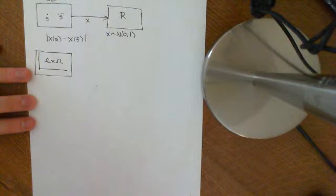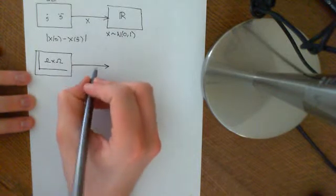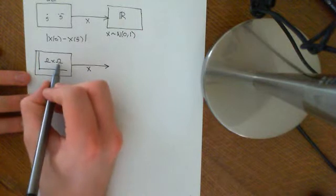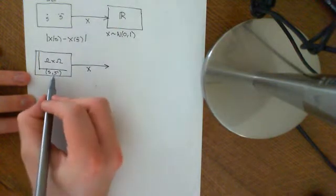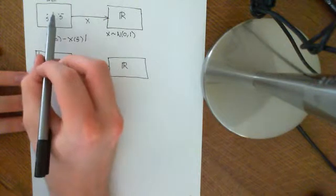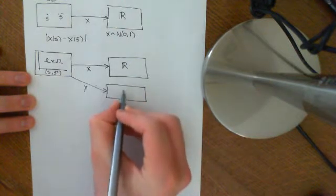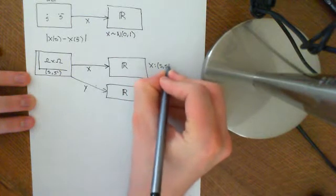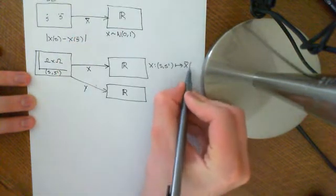Now we're going to set up a joint random variable — two random variables effectively on omega cross omega. We can define the random variable X on this product space: since every element is an ordered pair, X ignores the second entry of the ordered pair. So if we have an ordered pair (s, s-prime), it ignores s-prime and ascribes the same real number that the original mapping — let's call it X-bar — would ascribe to s. So X maps (s, s-prime) onto X-bar of s.